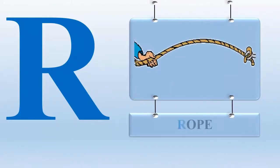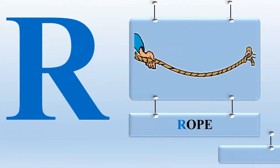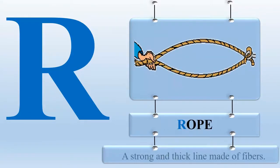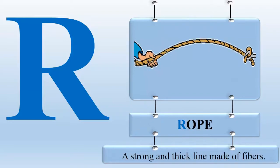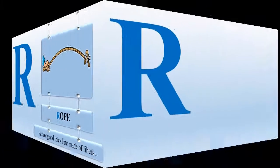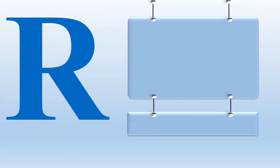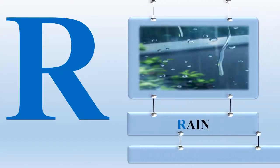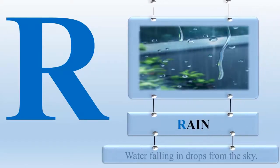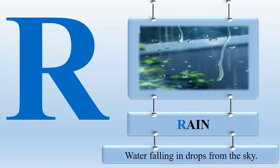R for rope — a strong and thick line made of fibers. R for rain — water falling in drops from the sky.